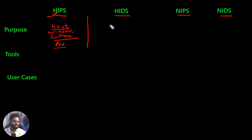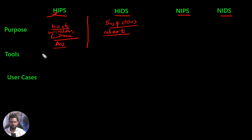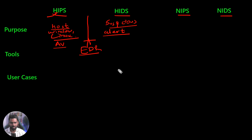When you talk about HIDS, it also detects all suspicious activity within the endpoints and gives alerts. Technically speaking, nowadays although theoretically these two sound different, in the real world both are combined together and become EDR — endpoint detection and response. Both HIPS and HIDS are combined together and we get a product called EDR.